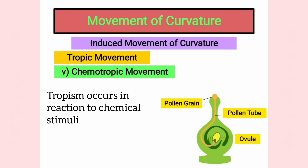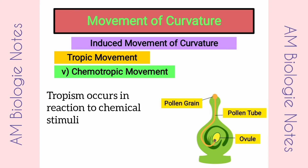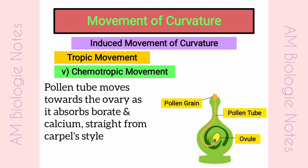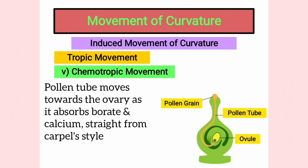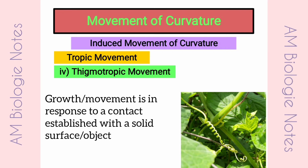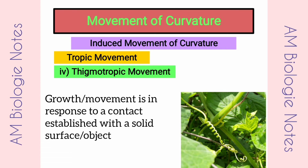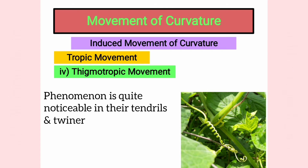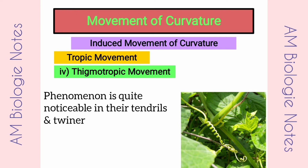Chemotropic movement: This tropism occurs in reaction to chemical stimuli. It is a common occurrence in flowering plants. For example, the pollen tube moves towards the ovary as it absorbs borate and calcium from the carpel's style. Thigmotropic movement: Here, the growth or movement is in response to contact established with a solid surface or object. Thigmotropism is quite common in climbers like money plants, green peas, etc. The phenomenon is quite noticeable in their tendrils and twiners.